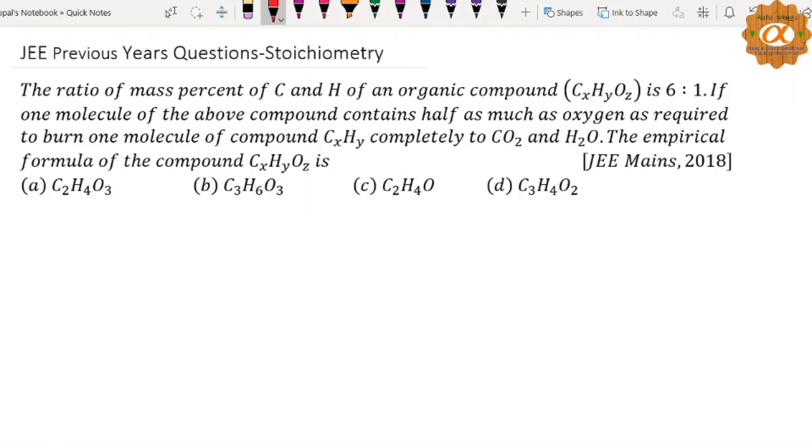We can see 6 is to 1 mass ratio of carbon and hydrogen. That means carbon: 6 by its molar mass 12, that is 0.5. For hydrogen: 1 by 1, that is 1. Simplest ratio, convert that by multiplying by 2. That means x is to y is equal to 1 is to 2, so y is equal to 2x.